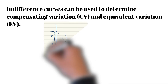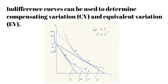Indifference curves and budget lines can be used to determine compensating variation and equivalent variation. The original budget line is LA, and the new budget line after the price increase is LB. To find the compensating variation, we shift the new budget line upwards until it is tangent to the original indifference curve. The vertical distance between the two parallel lines is the compensating variation.